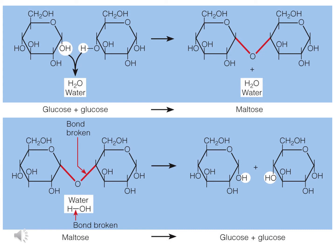The second example on the lower part of the slide is the opposite type of reaction, or hydrolysis. This is where you will see the bond between a water molecule is broken, along with the bond which had linked the two monosaccharides together. The result is going to be two individual units of glucose being produced from the breaking apart of a maltose molecule.